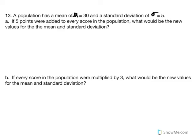These are problems coming from chapter 4, beginning with number 13. A population has a mean equal to 30 and a standard deviation equal to 5. If 5 points were added to every score in the population, what would be the new values for the mean and standard deviation? Given the rules presented previously, we recognize that if we are adding 5 points, a constant, to every score, we should see the same effect on the mean.